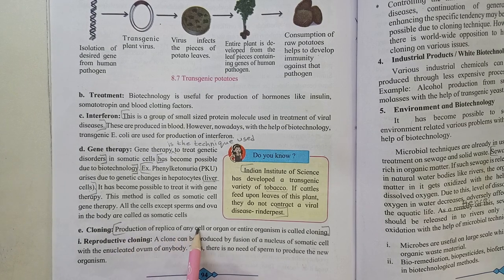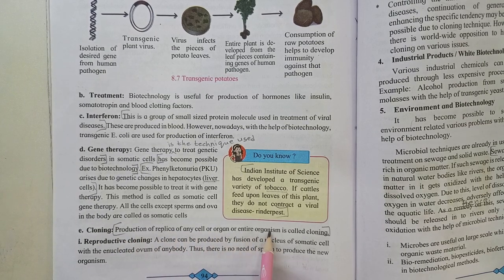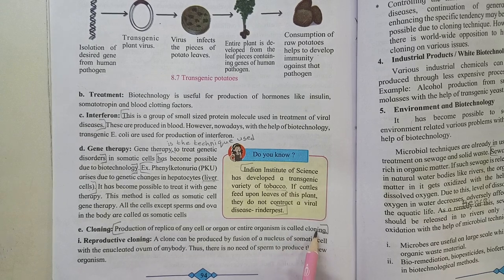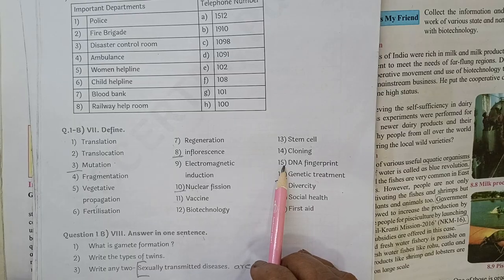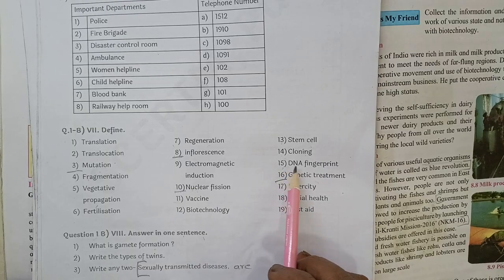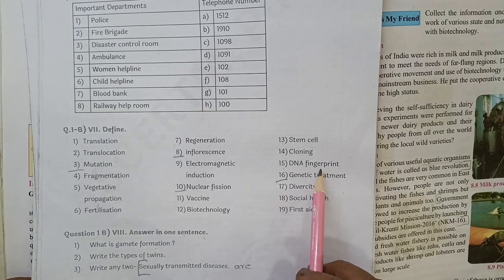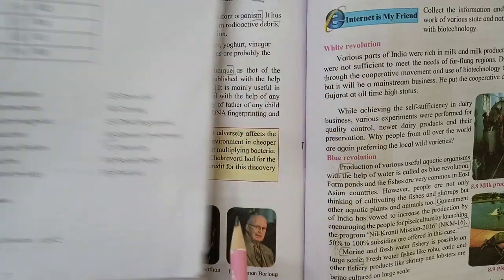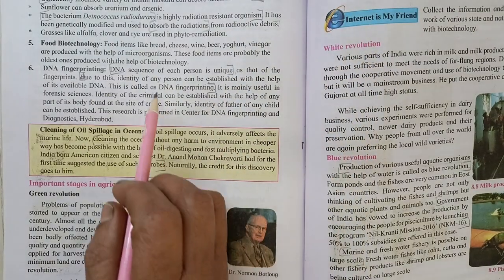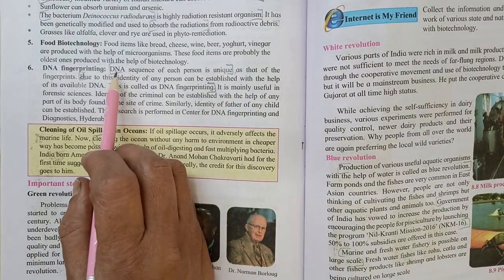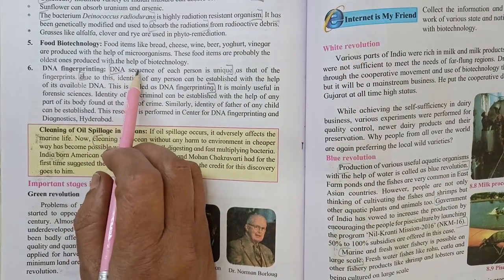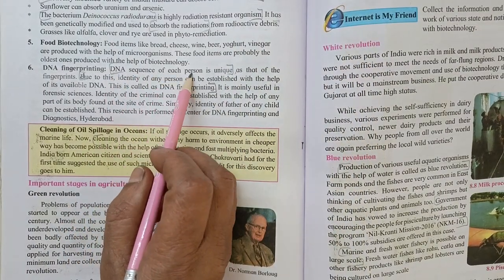Question 14: Define Cloning. Page number 94 — Production of a replica of any cell, organ, or entire organism is called cloning.